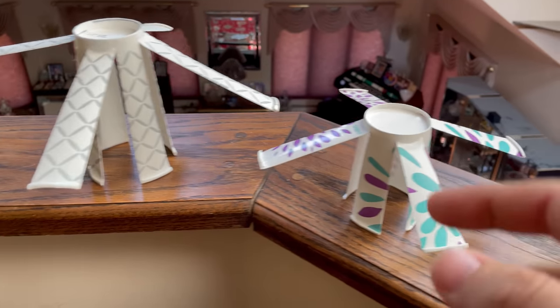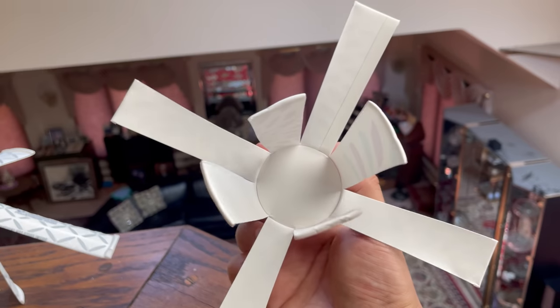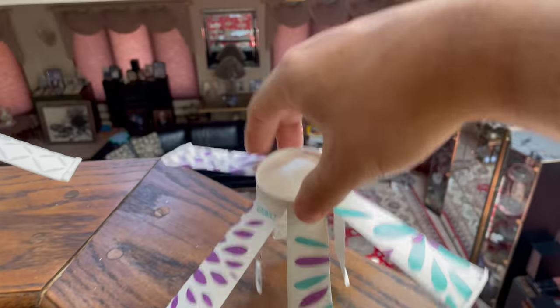To throw the helicopter, just make sure that the four propellers are bent upwards like this and the other ones are facing down and haven't been folded yet. Then all you need to do is just throw it from a height and give it a spin.